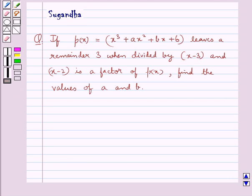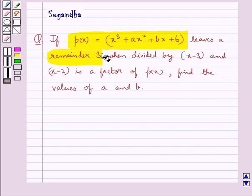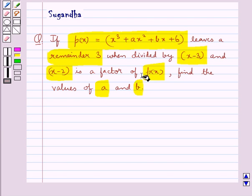Hello and welcome to the session. In this session we discuss the following question: if p(x) is equal to x cubed plus ax squared plus bx plus 6, leaves the remainder 3 when divided by x minus 3, and x minus 2 is a factor of p(x), find the values of a and b.